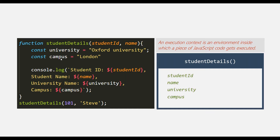And the logic of this function will also get executed inside this box. And like this, for each function, a box will be created in the call stack. All the information related to that function will be stored and executed in that box. And this box is called an ExecutionContext. Inside this ExecutionContext, a piece of JavaScript code gets executed.